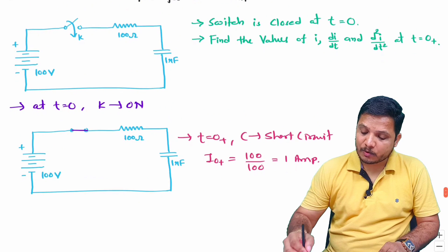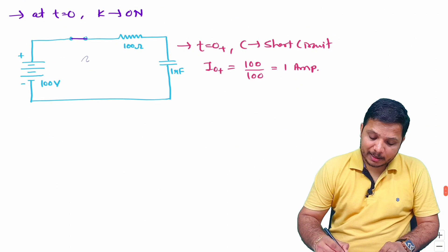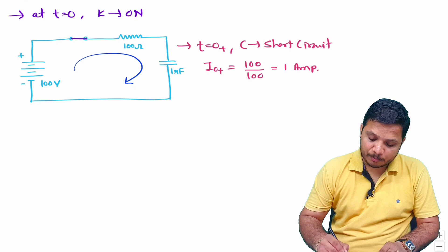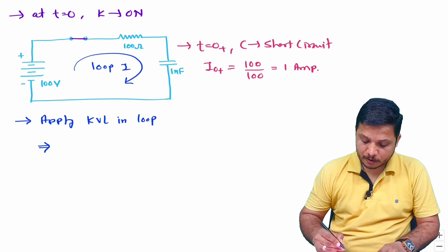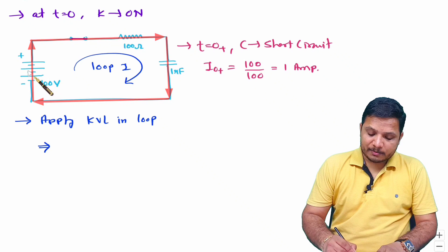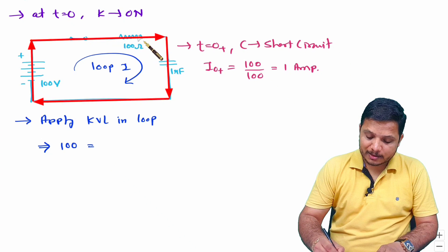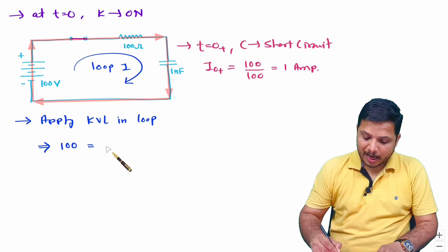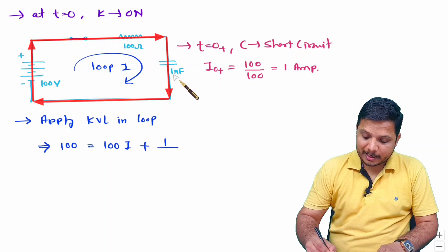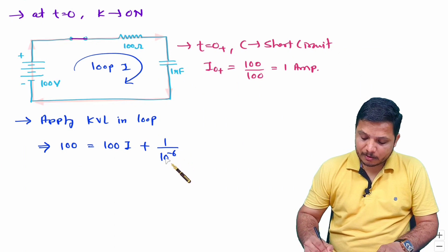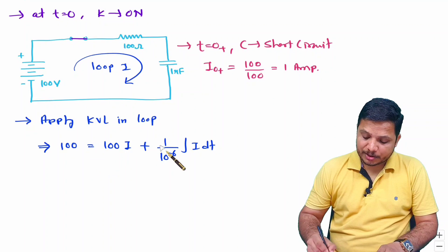Our agenda is to identify di/dt and d²i/dt². For that, we need to apply KVL in this loop. Let us consider current i in this loop and apply KVL. The battery going from minus to plus gives plus 100 volts, which equals voltage across resistance — 100 times i — plus voltage across capacitance, which is (1/C) times the integral of i dt, where capacitance is 1 microfarad, so 10⁻⁶. This is the KVL equation we have.